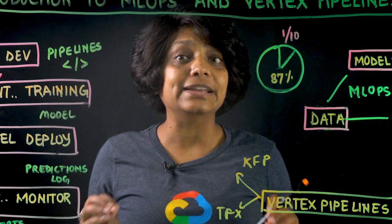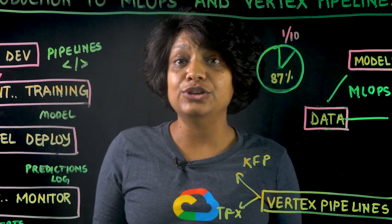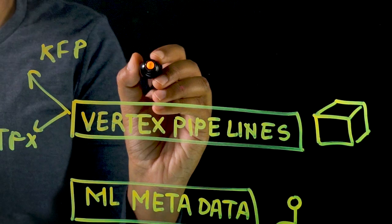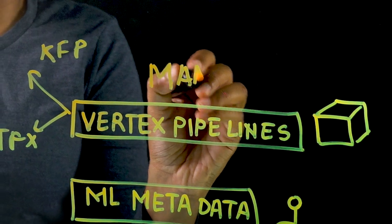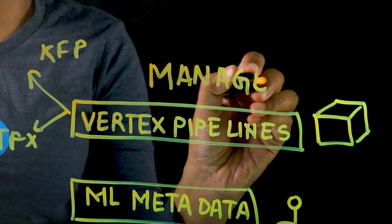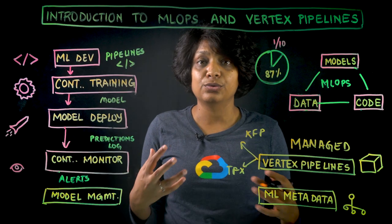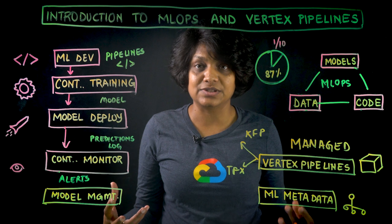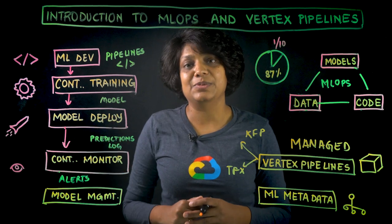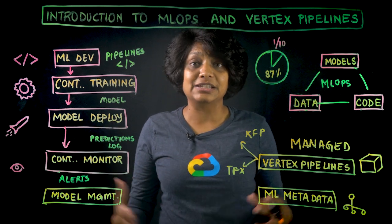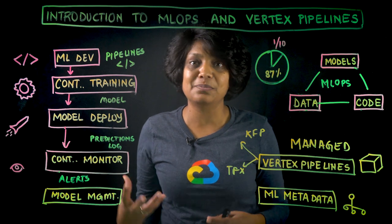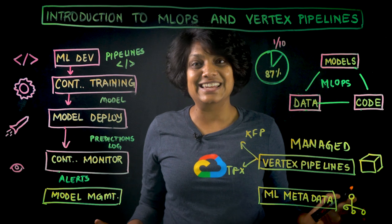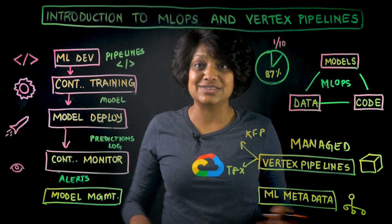Why do you need Vertex Pipelines if you already use Kubeflow Pipelines today? The biggest reason is that it is managed. Because it is managed, you don't have to maintain or create servers by yourself. When you're using KFP standalone, you need to build, scale, and maintain a Kubernetes cluster all by yourself. But with managed pipelines, you don't have to do any of that work — it's all serverless.